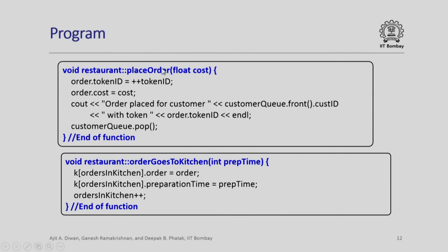Next, let us look at placing an order. There is a token number allocated to every person who places an order, with a base of 1000. So every time an order is placed, the order token ID will be 1001, 1002, 1003, etc. Every time this function is called with a parameter of cost, we set order.token_id to the next ID. We print for verification purposes, then pop the customer from the queue, because the customer has placed the order, got the token, and paid the money. Now the customer waits separately for the fulfillment of the order.